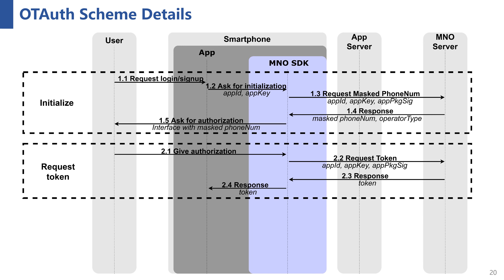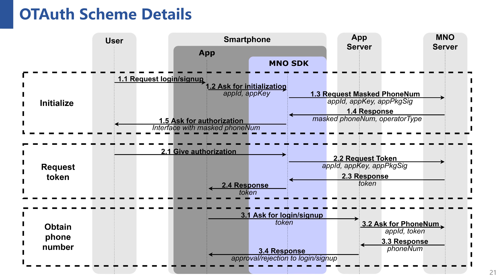The second phase is the token request phase. In this phase, the app client obtains a token associated with the app ID, app key, and the local phone number. With this token, the app server can learn the local phone number. The third phase is the phone number obtainment phase. In this phase, the app server obtains the user's local phone number and decides whether to approve the user's login or signup request.